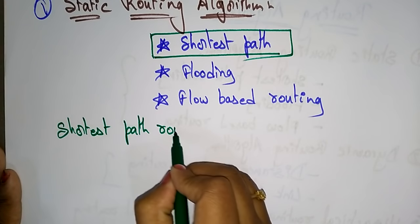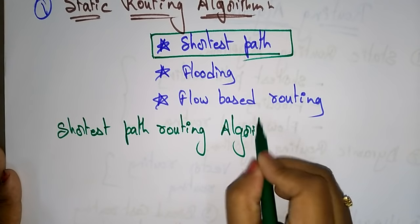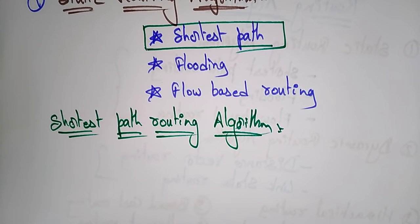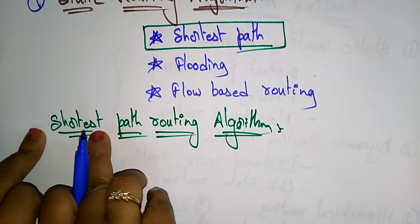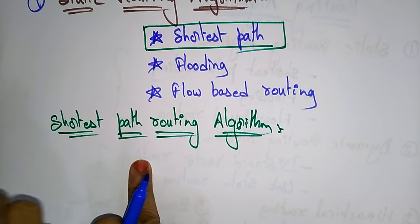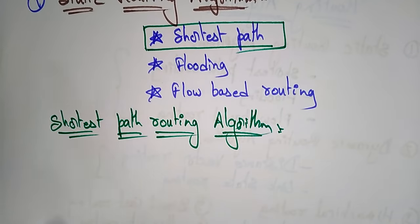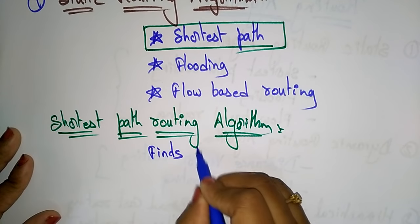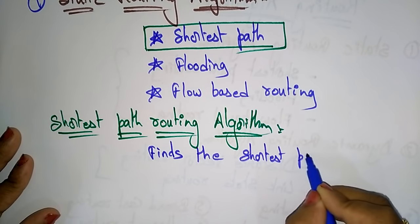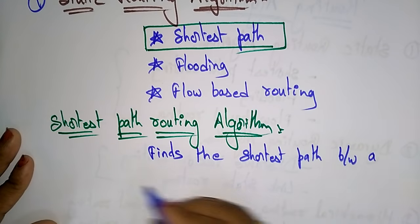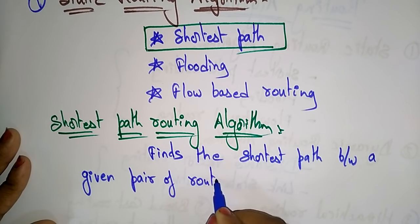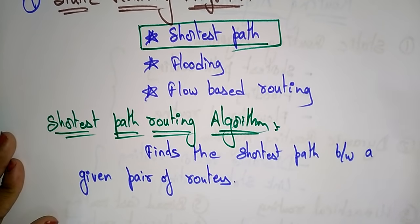The shortest path routing algorithm is a static one, so from the start you need to design the path. The main concept — as the name suggests — is that we have to select the shortest distance from source to destination. When you want to transfer a packet over a network, you need to find the shortest path between a given pair of routers.